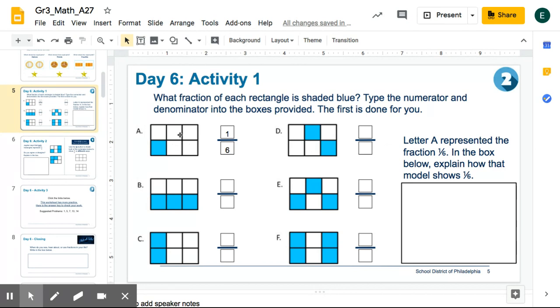So this first one was done for you as an example. It says that one-sixth is shaded blue. Your job is to figure out what fraction is shaded blue for letters B, C, D, E, and F.